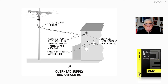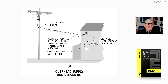The service point can be defined in Article 100, and more information can be obtained about it in 230.200. Premises wiring is also defined in Article 100. Service conductors are also defined in Article 100, as you see in the illustration. So this figure 17-1A deals with overhead supply in accordance with what is considered a service drop in Article 100, as service point and service conductors are defined in that Article 100 in the NEC.